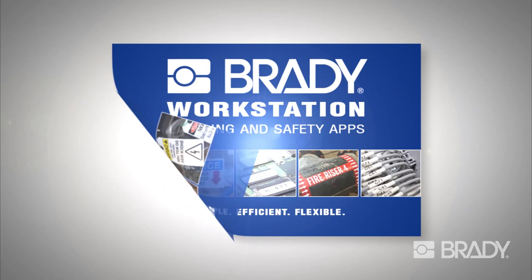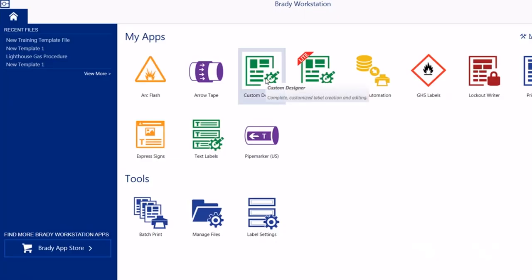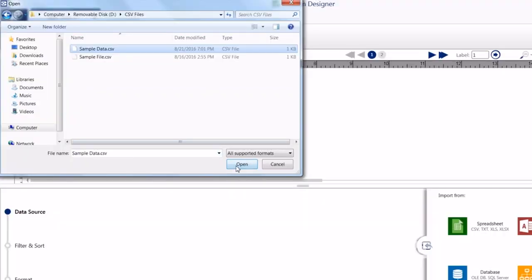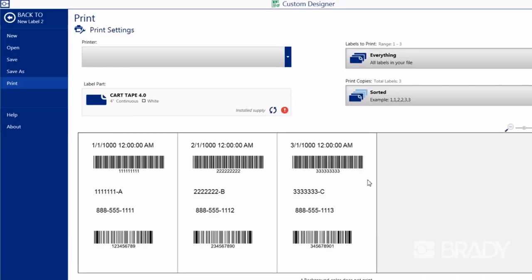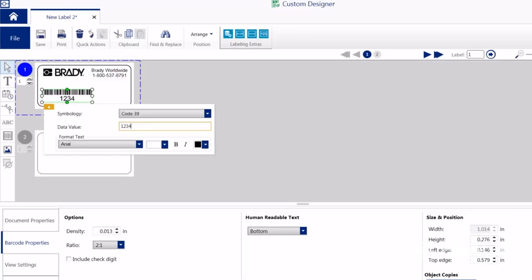Brady's powerful and easy-to-use Brady Workstation software works seamlessly with the Raptor A6500. Brady Workstation optimizes the label design process with the ability to import spreadsheet data, print true-type fonts, barcodes, and custom graphics.